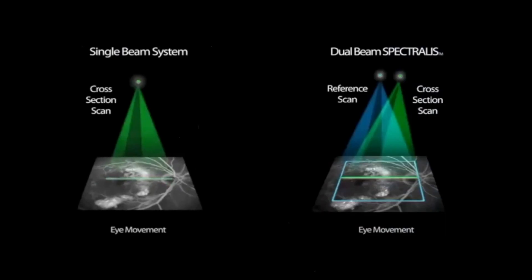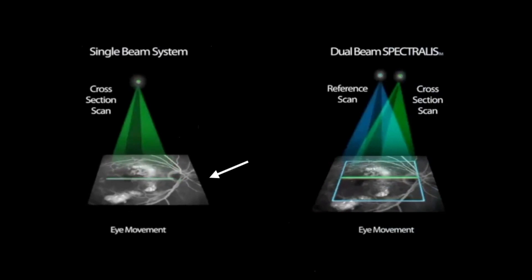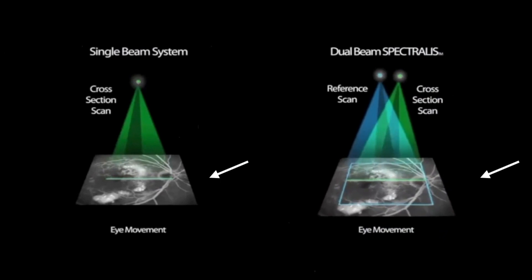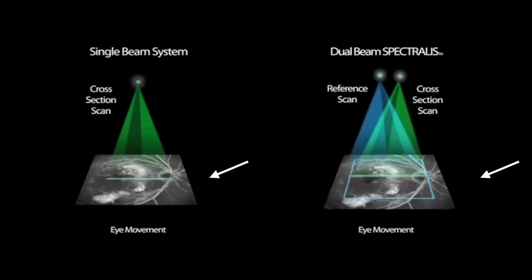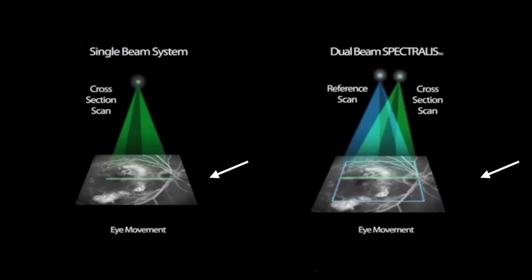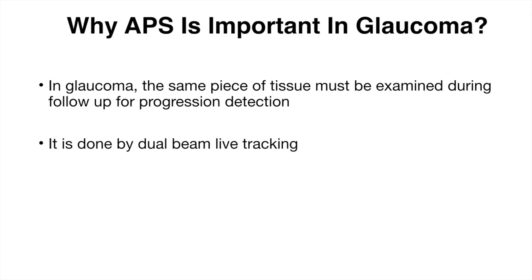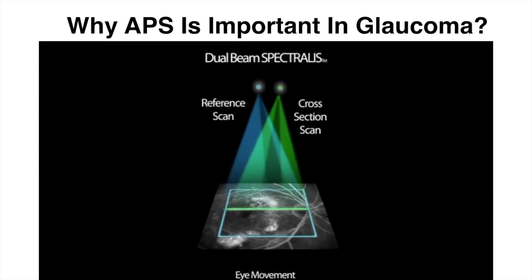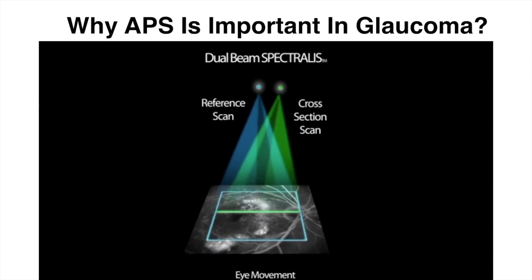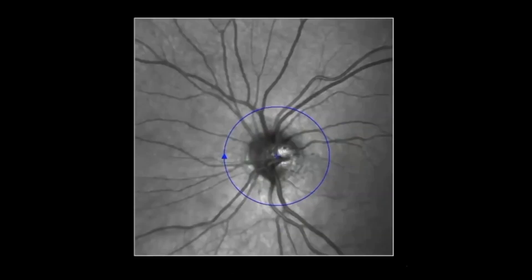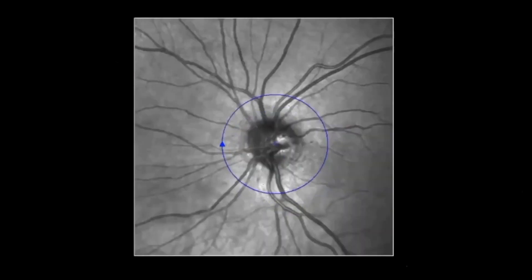A video comparison shows the single beam system on the left: the scan does not compensate for eye movement. On the right, the dual beam Spectralis compensates for eye movements with the help of a reference scan. With Spectralis dual beam live tracking, the same piece of tissue is examined during glaucoma follow-up. The anatomic positioning system can detect glaucomatous progression at the level of 1–2 microns difference between two visits.